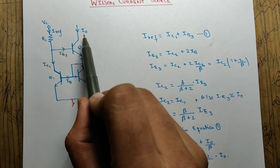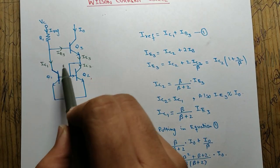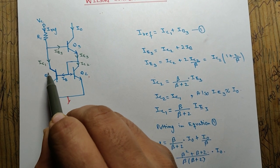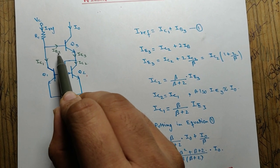We need to find the relation between reference and output current. I have already marked all the currents. You can see this is ic1 because it is the collector current of transistor 1, ib3 because it is the base current of transistor 3.